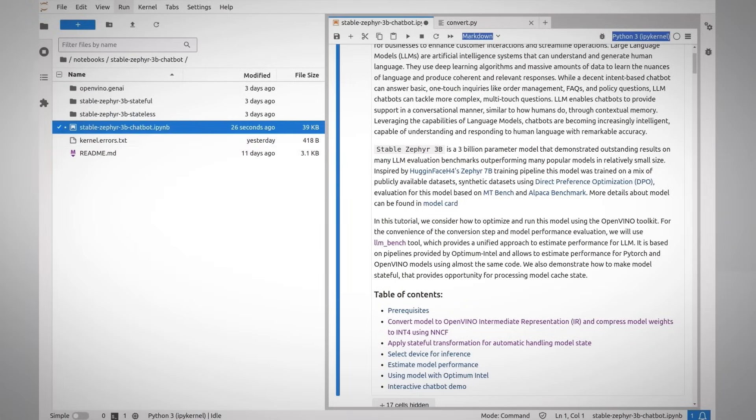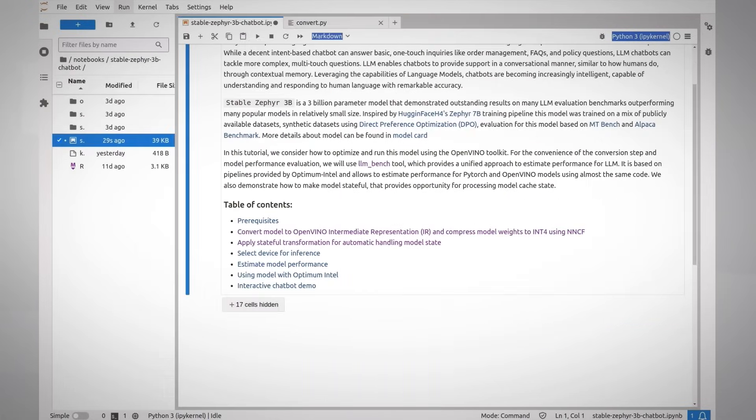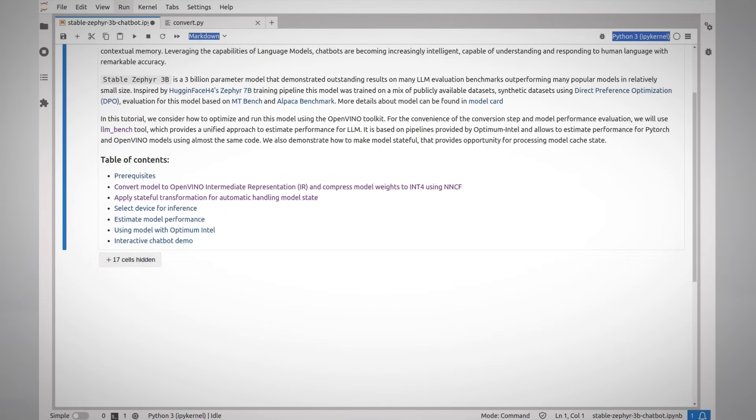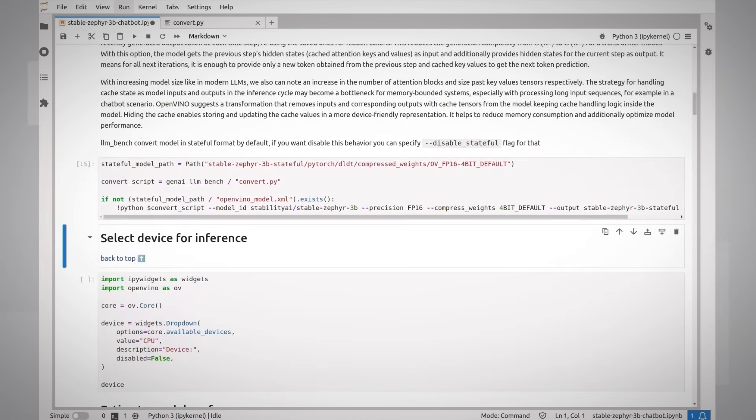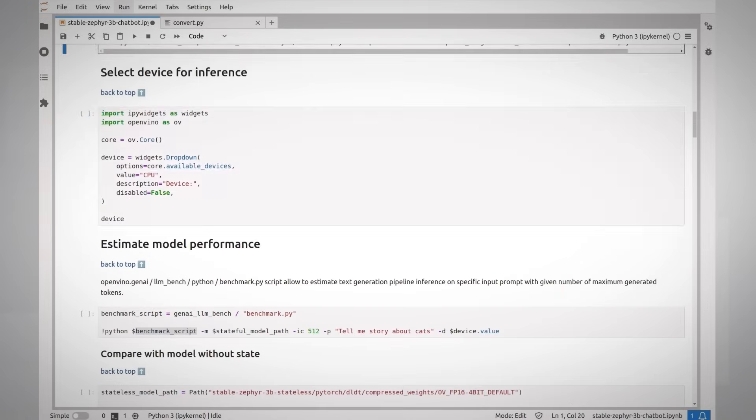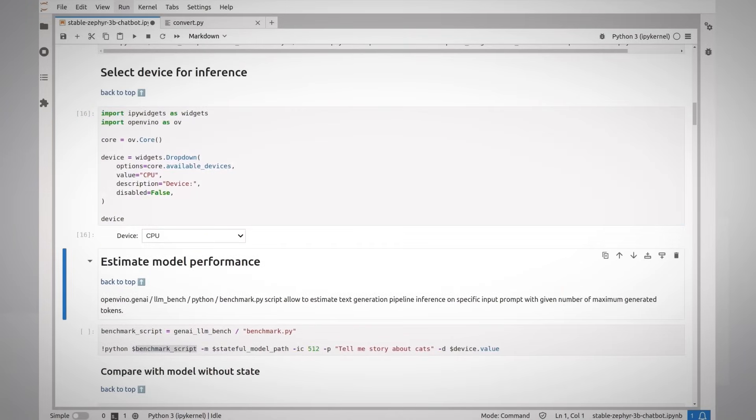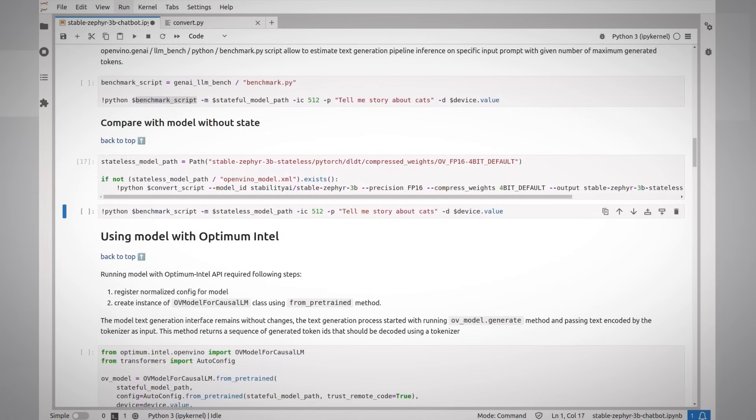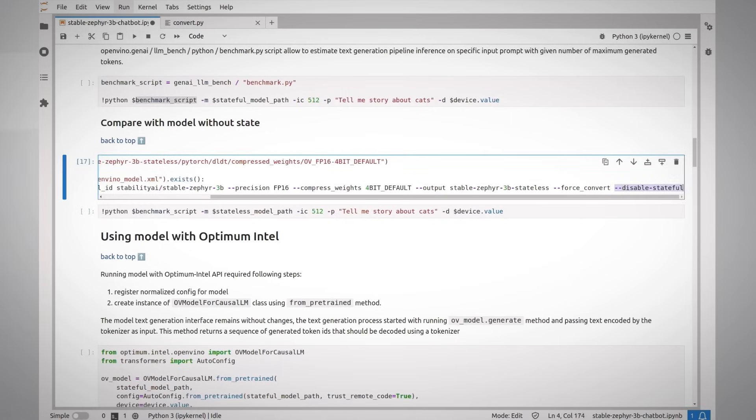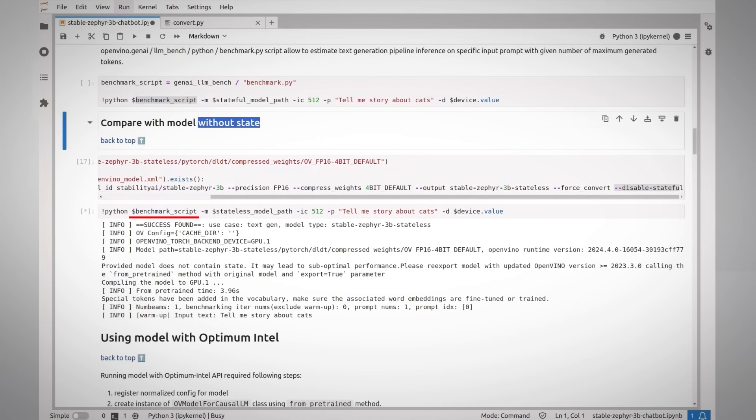And here is a simple demonstration. I'm running the OpenVINO notebook stable sapphire 3 billion chatbot. Getting the libraries and installing and here I'm getting the stateful model. Using this convert script, I'm selecting the device to be my Intel GPU A770. I'm getting first the stateless model, I'm using the convert script and disable stateful.